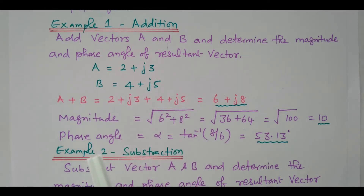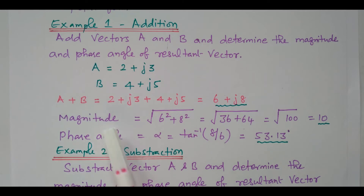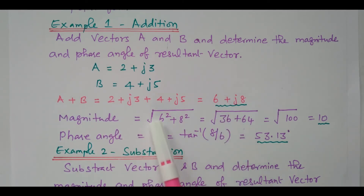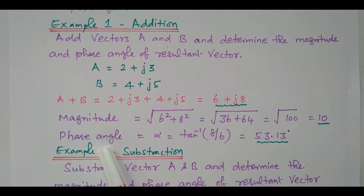And one more question is we need to find magnitude and phase angle, that is the polar form. How will you find the magnitude? Square root of real term squared plus imaginary term squared: square root of 6 squared plus 8 squared.